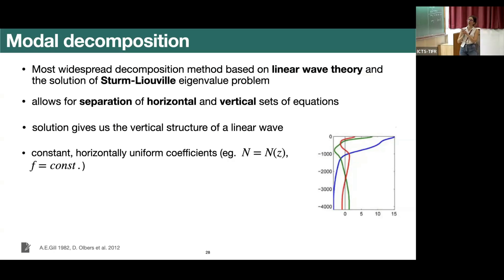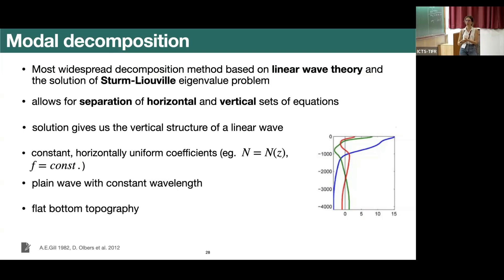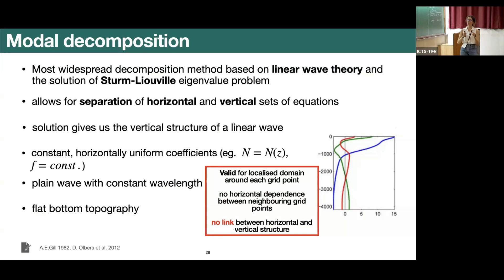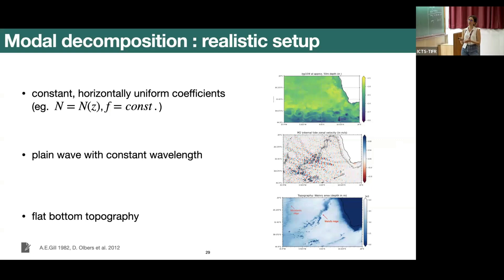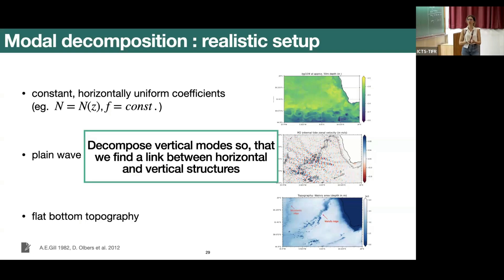This theory is mainly valid for particular assumptions: constant stratification, horizontally uniform buoyancy frequency, a plane wave assumption with constant wavelength, and flat bottom topography at each grid point. While valid for a localized domain around each grid point, it doesn't give enough information about the dependence between neighboring points over a larger area, and it doesn't give us a link between horizontal and vertical structures — which is exactly what we are interested in studying with a high-resolution model over this whole area.